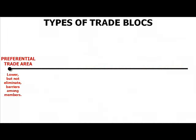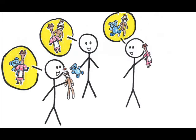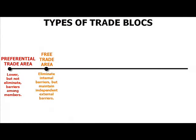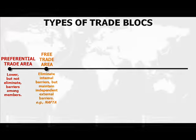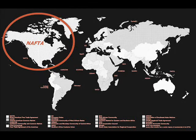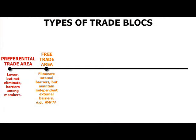The next level of commitment is a free trade area, where member countries agree to eliminate trade barriers among themselves, but continue to maintain independent policies in their dealings with non-member countries. An example of a free trade area is NAFTA, the North American Free Trade Agreement, where Canada, Mexico, and the U.S. have agreed to eliminate the barriers among themselves, but each maintains independent policy when trading with other areas of the world.